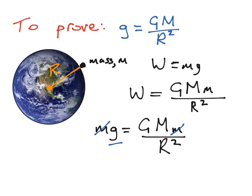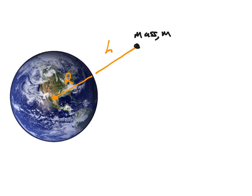If we now look at a situation where an object might be in orbit around the earth, for instance, the International Space Station, in this case we still have a mass called small m, but this time it's a height above the earth of a certain amount of metres.